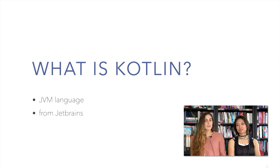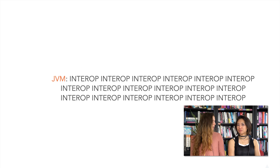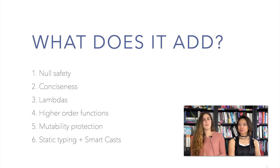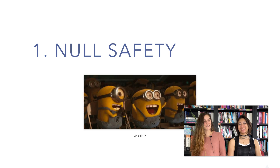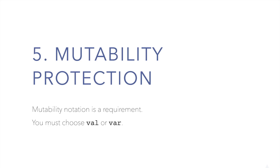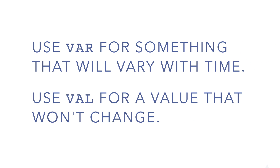For anyone who doesn't know what Kotlin is, can you give us a quick description? Kotlin is a language built for the JVM, which means it's interoperable with Java. It really seeks to address a lot of the issues in Java. Most notably, it has built-in null safety in the types, which is great. It also has mutability protections — things are vals or VARs — so you're declaring whether they can be reassigned at declaration level.